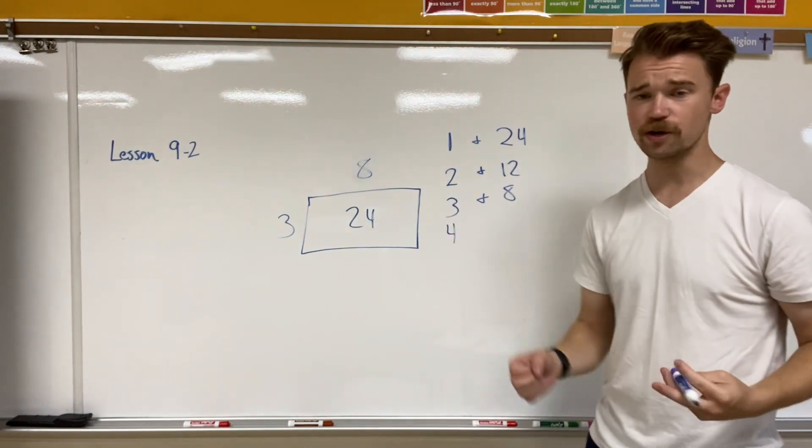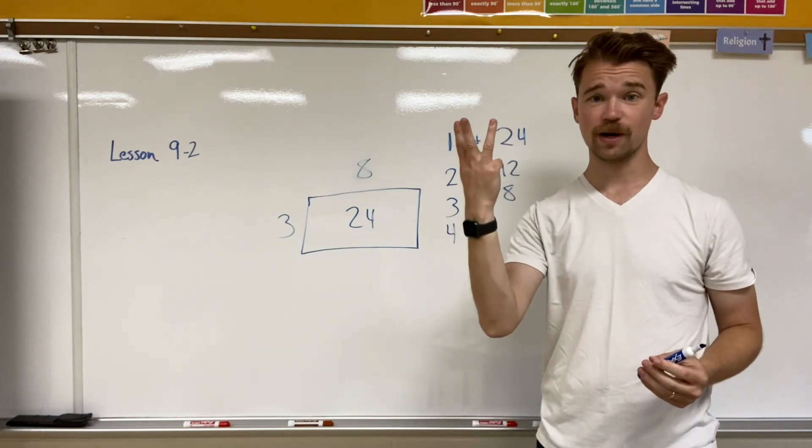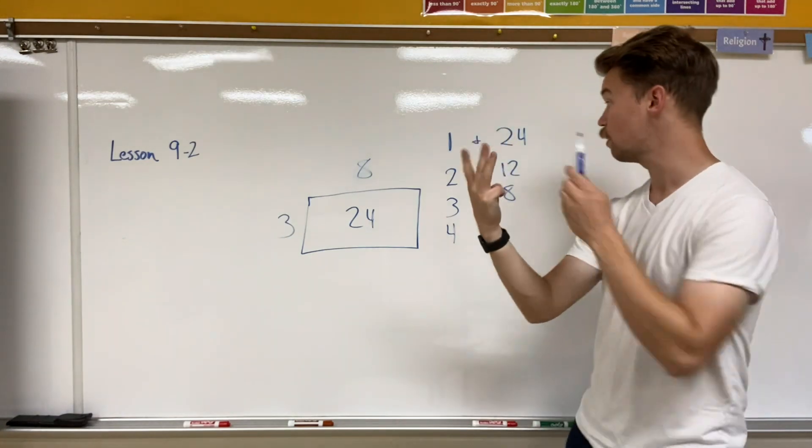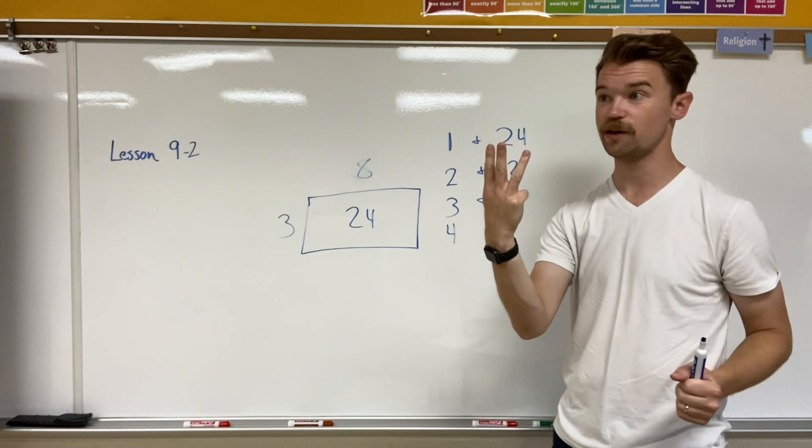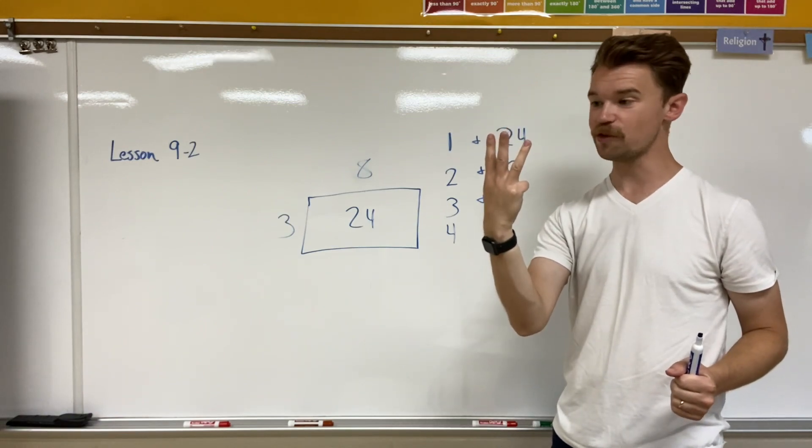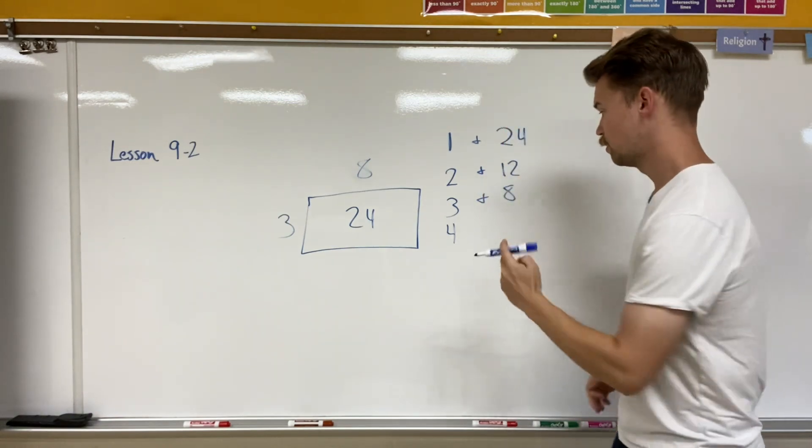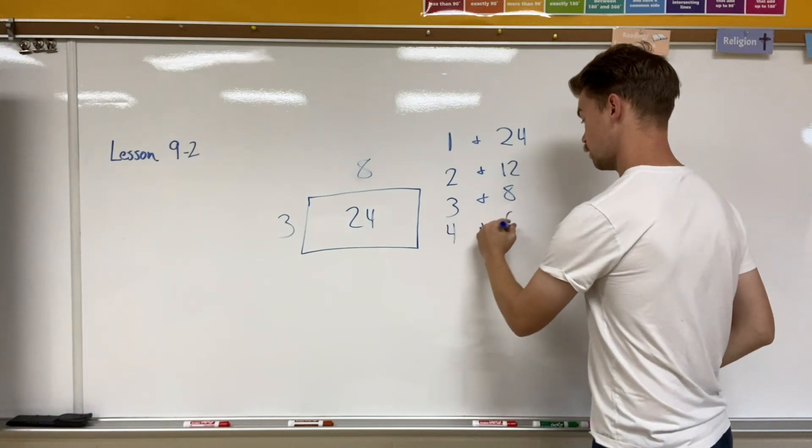Four. Well, let's count by fours. Four, eight, 12. If I'm already at 12, and I know that 12 is one of the factors, so I can double that. So I have six. Four and six are a factor pair.